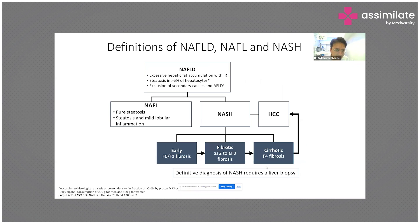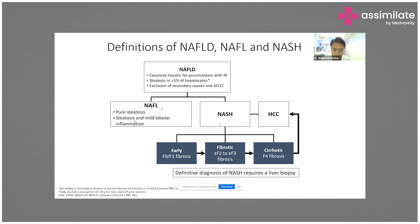By definition, non-alcoholic fatty liver disease involves excessive fat accumulation with the presence of insulin resistance, requiring more than 5 percent steatosis in the hepatocytes and exclusion of secondary causes of acute fatty liver. This broad spectrum includes pure fatty liver, which is pure steatosis, steatosis with mild lobular inflammation, and an entity known as NASH, which includes early fibrosis, late fibrosis, or eventually cirrhosis.